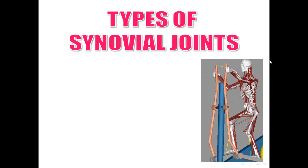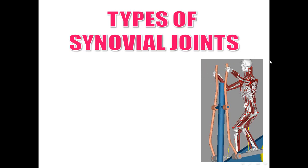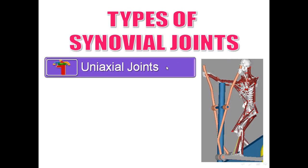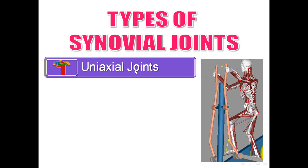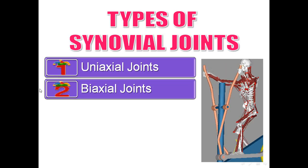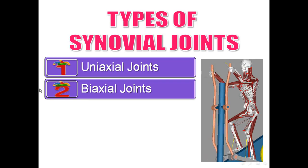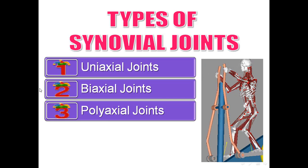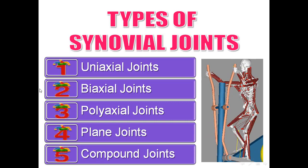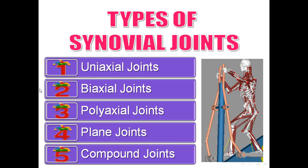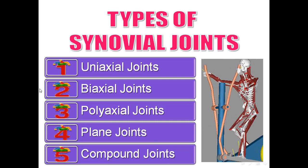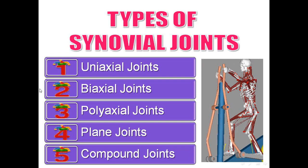What are the types of synovial joints, according to the number of axes of movement? We have: uniaxial joints — movement occurs around one axis; biaxial joints — movement occurs around two axes; polyaxial joints — movement around more than two axes; plane synovial joints — just sliding or gliding movement; and compound joints.